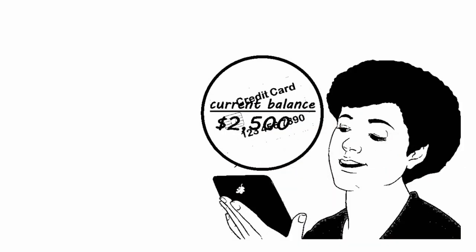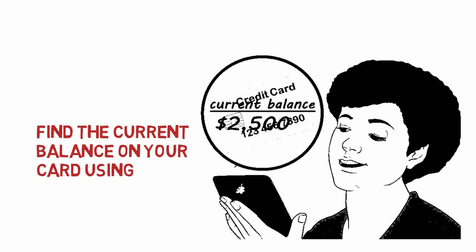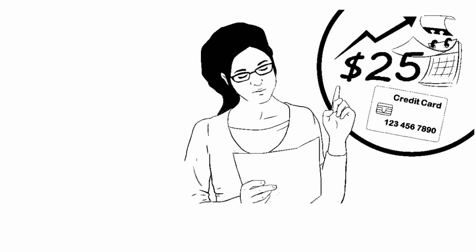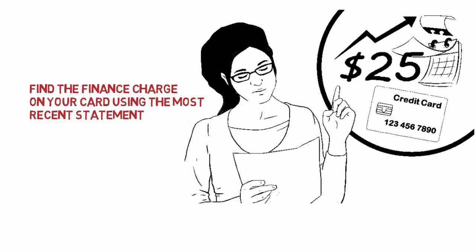Find the current balance on your card using the most recent statement. If your card statement does not tell you your APR, you can calculate it right off your statement sheet. For an example, assume your current balance is $2,500. APR is calculated on your entire balance, so just use that number. Find the finance charge on your card using the most recent statement. For this example, assume that your hypothetical credit statement says that your finance charge is $25 on the $2,500 debt. This charge will change from month to month.